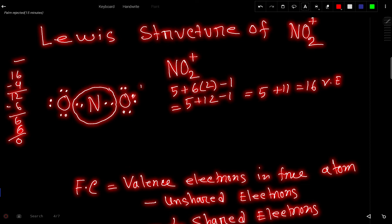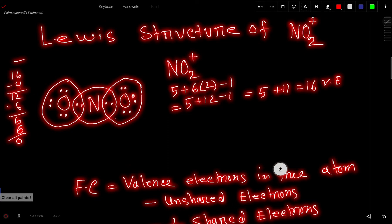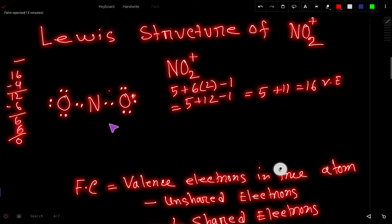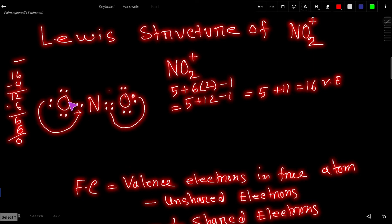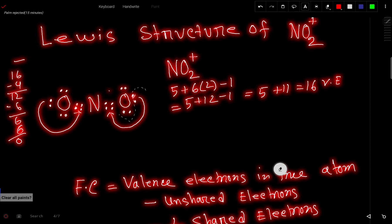Now nitrogen has only four electrons but each oxygen has eight. We need to satisfy the octet for the central atom. The rule is that you have to move a lone pair as a bond pair, and you have to do it symmetrically — that is, equally. Since there is no difference between the two oxygens, you move electrons from both oxygens. This gives you the stable Lewis structure directly.